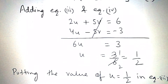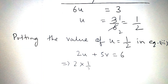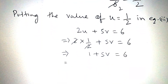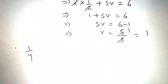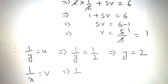Putting the value of u equals 1/2 in equation 3: 2u plus 5v equals 6, that is, 2 into 1/2 plus 5v equals 6, giving 1 plus 5v equals 6, so 5v equals 5, therefore v equals 1. Now, 1/y equals u equals 1/2, therefore y equals 2, and 1/x equals v equals 1, therefore x equals 1.